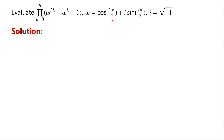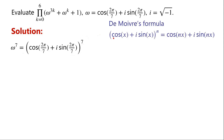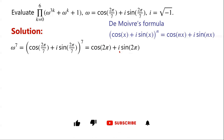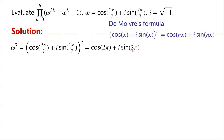The angle is 2π over 7, so we consider omega to the power of 7, which equals cosine 2π over 7 plus i sine 2π over 7, all to the power of 7. By De Moivre's formula, cosine x plus i sine x all to the power of n equals cosine nx plus i sine nx. Applying this, we get cosine 2π plus i sine 2π. We know cosine 2π equals 1 and sine 2π equals 0, so omega to the power of 7 equals 1.